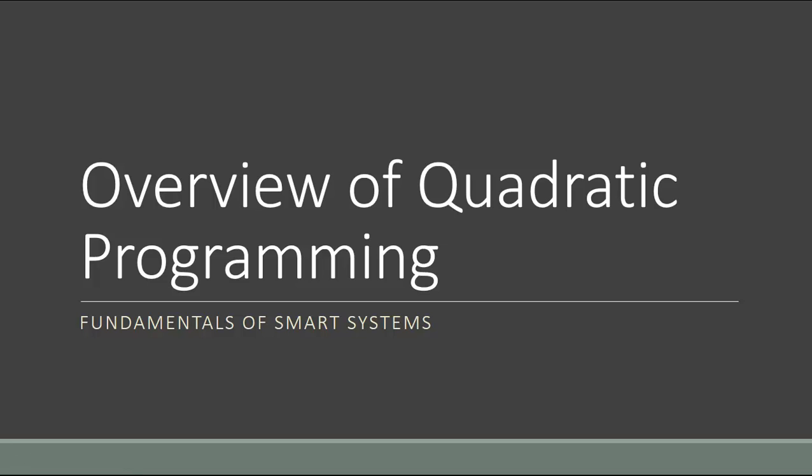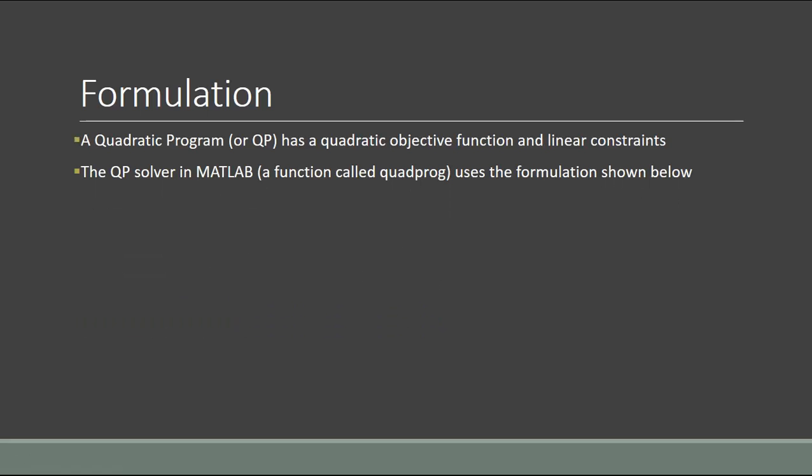A quadratic program is an example of an optimization problem that takes on a particular form. Specifically, it has a quadratic objective function — meaning it will have decision variable squared terms — and it has linear constraints.